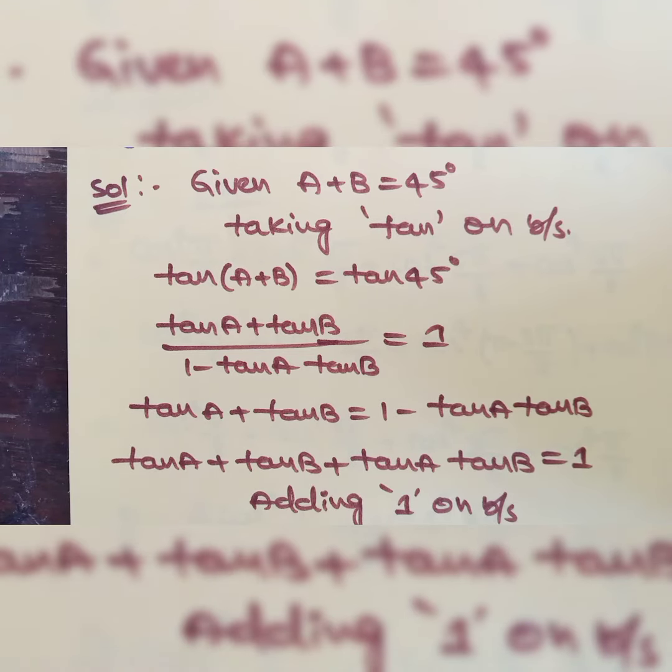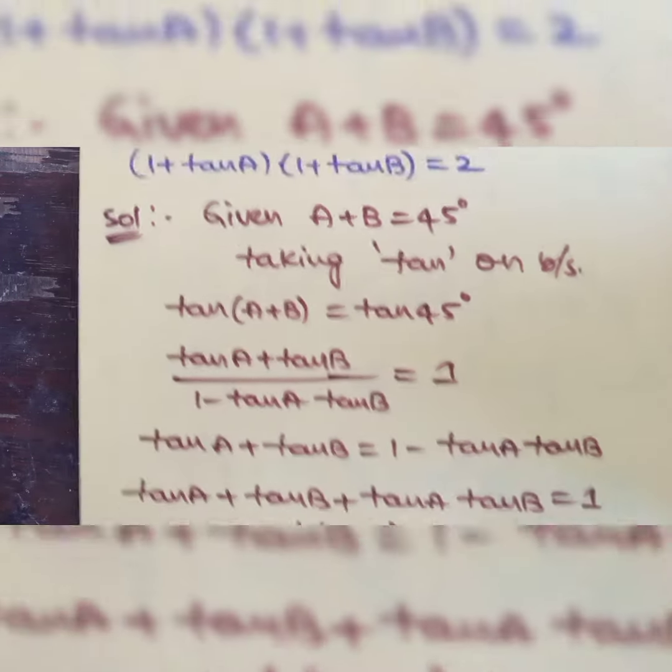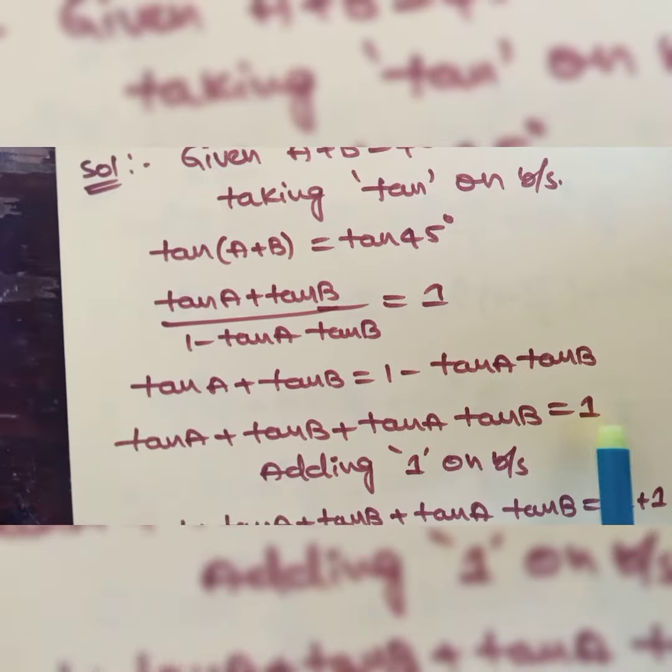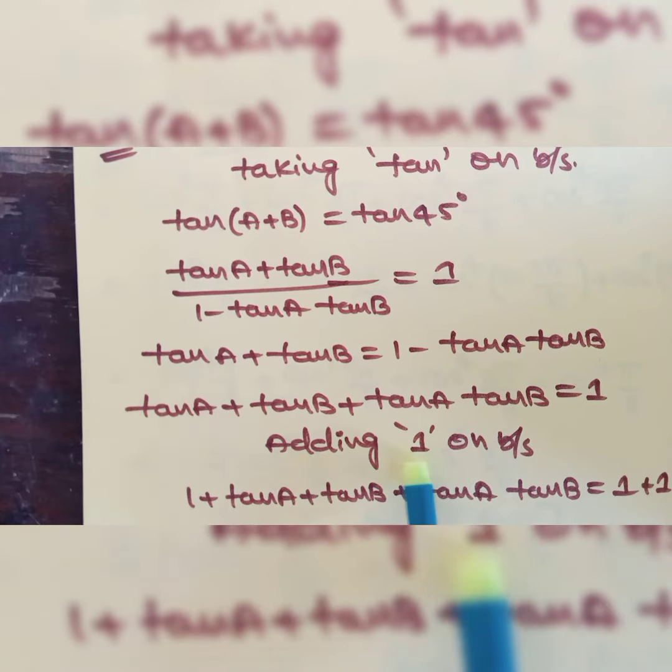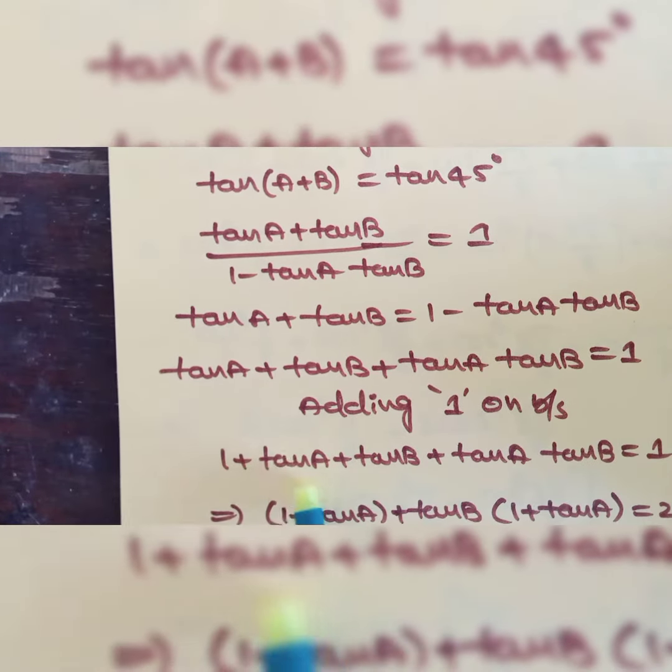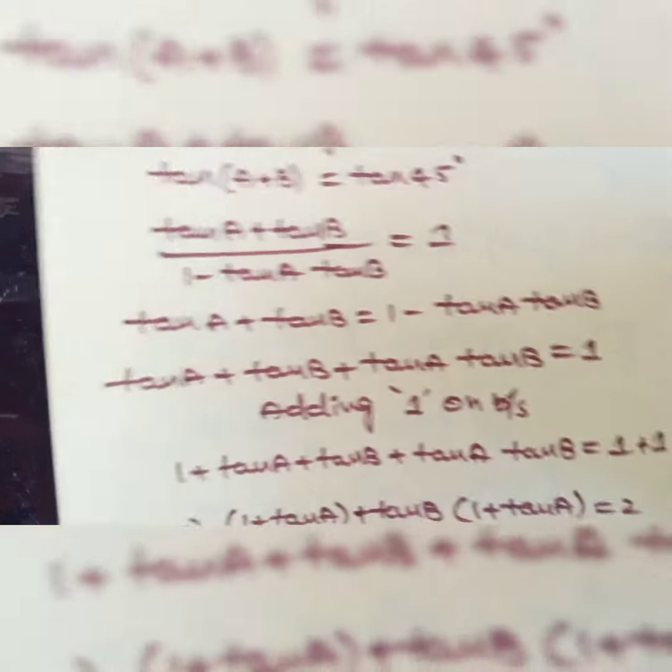In the question we have 2. To get 2 in this place, we should add 1 on both sides. So adding 1 on both sides, what we will get? 1 plus tan A plus tan B plus tan A tan B is equal to 1 plus 1.